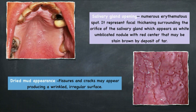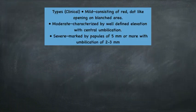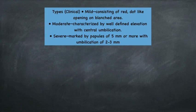For a two or three marker exam question, mention the classification of stomatitis nicotina: mild, moderate, and severe. Mild consists of red dot-like openings on a blanched area. Moderate is characterized by well-defined elevations with central umbilications. Severe is marked by papules of 5 mm or more with umbilications of 2 to 3 mm. This classification will help you fetch better marks.